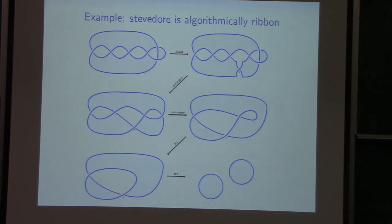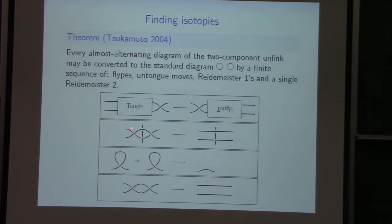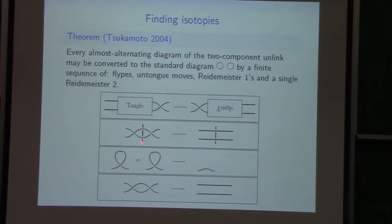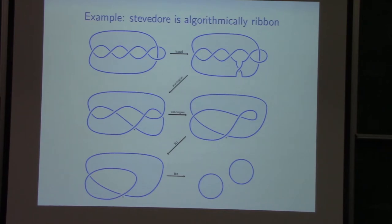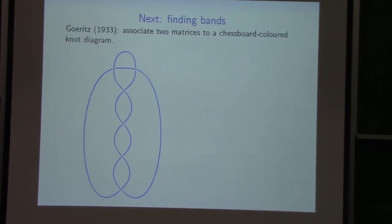Here's an example: the Stevedore's knot is algorithmically ribbon. We introduce a band move with a non-alternating crossing, then do an untongue move — something like a Reidemeister two with a third strand in the background — smoothing out two crossings. We see another such region, smooth it out again — untongue, untongue — then get Reidemeister two and Reidemeister two. Now we need to understand: how does the computer know where to put the bands? That's what I discuss next.